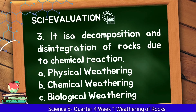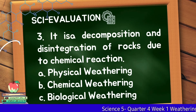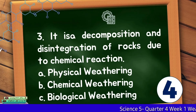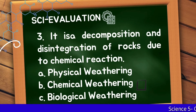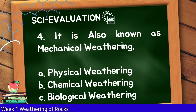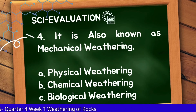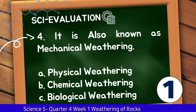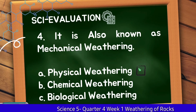Number 3: It is the decomposition and disintegration of rocks due to chemical reaction. Letter A: Physical Weathering, Letter B: Chemical Weathering, Letter C: Biological Weathering. Very good! The correct answer is Letter B, Chemical Weathering. Number 4: It is also known as mechanical weathering. The correct answer is Letter A, Physical Weathering.